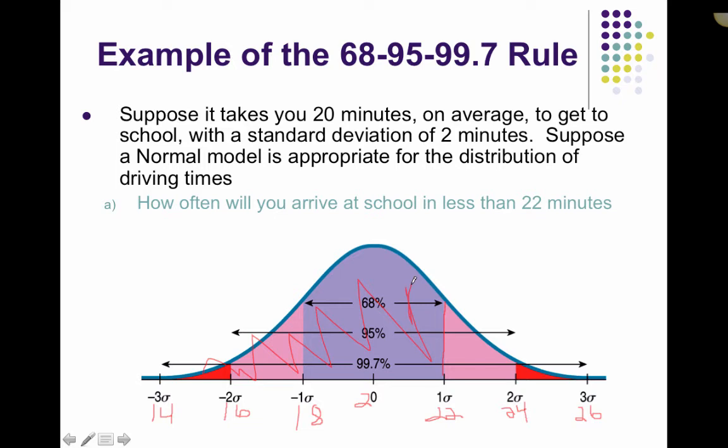So, using the 68, 95, 99.7 rule, I know that this cutoff marks the 68%. So, that's the middle 68%, which comes to here. So, what is left over? So, if we have a total of 100%, and we get rid of 68% of it, we're left with 32%.